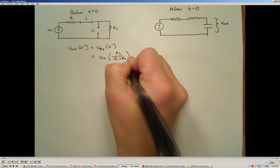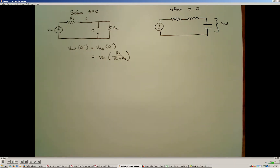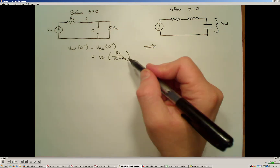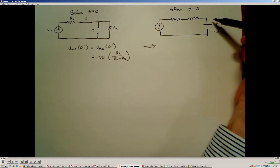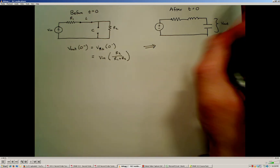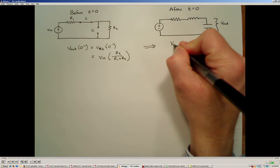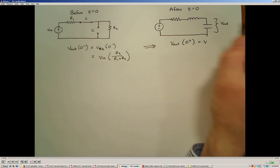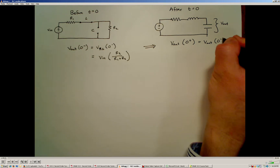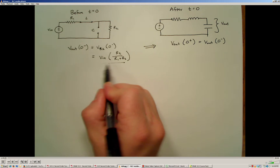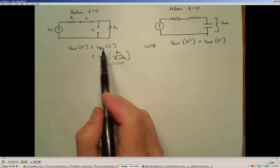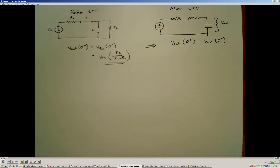From the properties of capacitors, the voltage across the capacitor can't change instantly, so immediately after time equals zero — immediately after we open the switch — the output voltage across the capacitor must be the same as it was before the switch changed its position. Since we have all the values, the voltage across the capacitor will be the same immediately before and immediately after the switch changes. So we have our x-naught value and can calculate that.